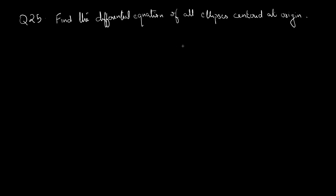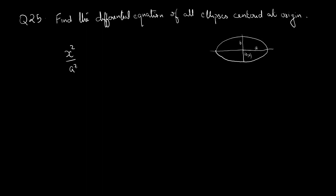We need to know how to form the equation of the family of curves given. To form the equation of an ellipse: when the semi-major axis is A and semi-minor axis is B, with center at (0, 0), the equation of the ellipse can be written as x² / A² + y² / B² = 1. This is the equation of an ellipse with semi-major axis A and semi-minor axis B with center at the origin.